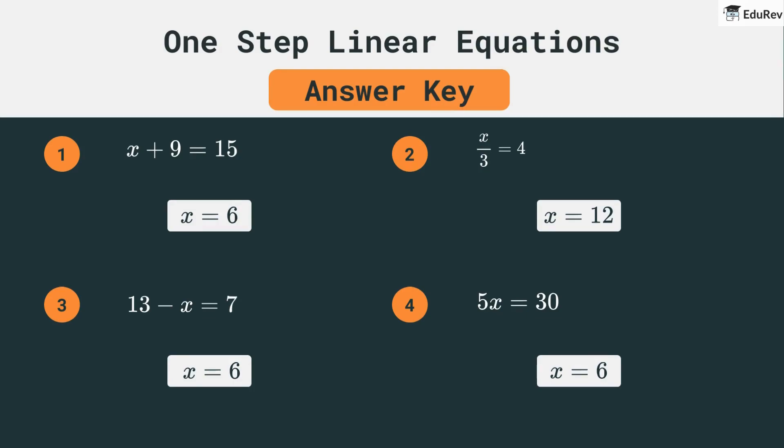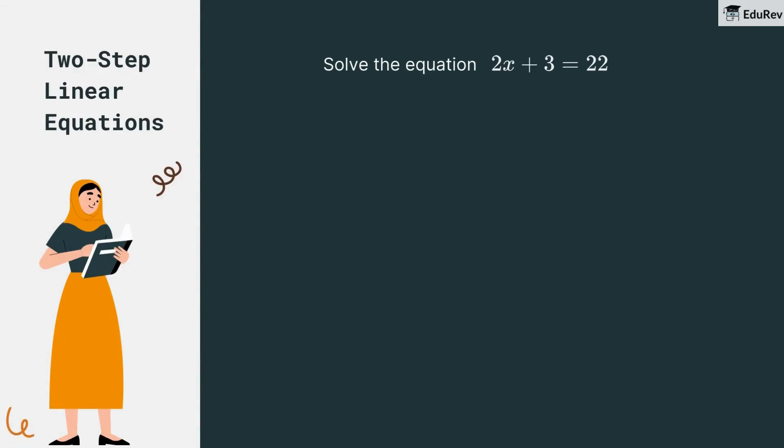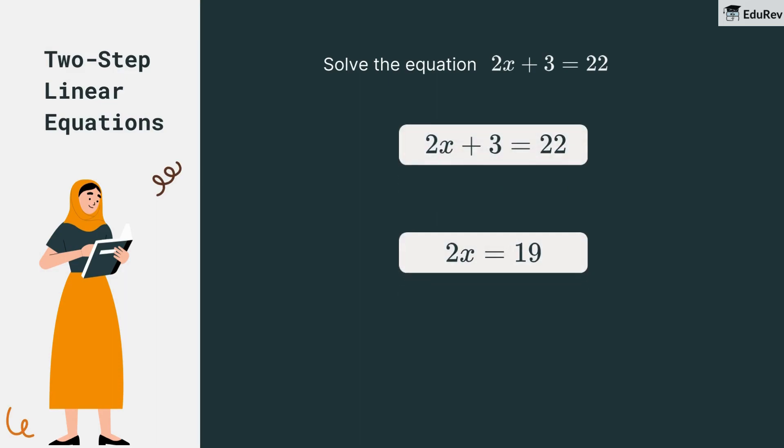Now, we're stepping it up with two-step linear equations. These might sound a bit more complicated, but don't worry. Like this one, 2x plus 3 is equal to 22. We first find that 2x equals 19, then divide by 2 to get x is 9.5.